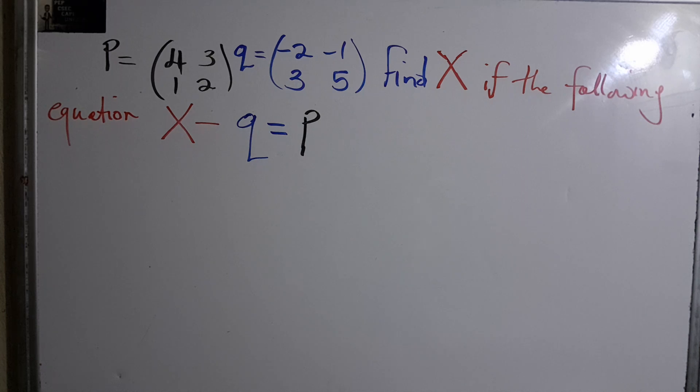Welcome back to Renox Bennett channel. Today we're looking at another equal matrices problem. P equals (4, 3; 1, 2) and Q equals (-2, 1; 3, 5). Find X if the following equation...